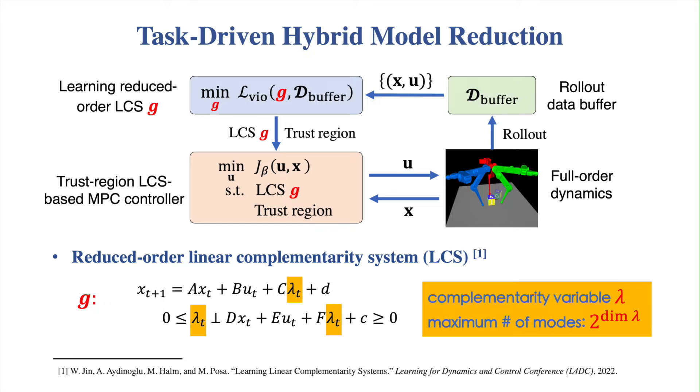Our method consists of two main components. The first is learning a reduced-order linear complementarity system, or LCS, which is a compact representation of a piecewise affine system.